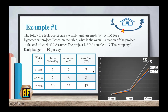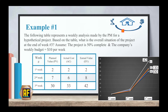We'll now do an example and everything will be much clearer. The following table represents a weekly analysis made by the project manager for a hypothetical project. Based on the table, what is the overall situation of the project at the end of week 3? As you can see, I have my planned value, my actual cost, and my earned value at week 1, week 2, and week 3. You can also see it in the graph, which makes it nicer to follow.